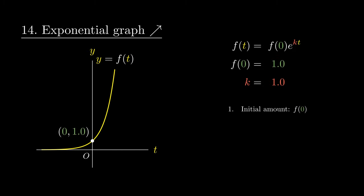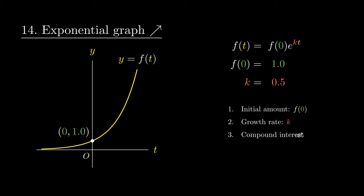As k changes, the original steepness of the graph changes as well. Interestingly enough, k would encode the growth rate of the exponential model. This graph is responsible for the math of continuously compounding interest. It also has the very special property that its derivative equals itself. This is the only function that does this.